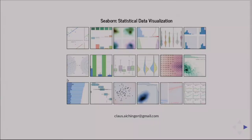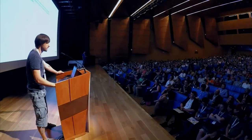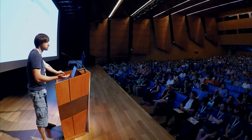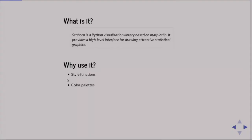I'm Klaus. I do data analysis and scientific computing, and I want to quickly show you a library that really increases the quality of my working life. Visually exploring datasets is often a very tedious task, and this is where Seaborn comes in handy. Seaborn is a visualization library built on top of matplotlib, scipy, and pandas — so it's standing on the shoulders of giants — and it offers a high-level interface to produce statistical graphics. It has nice style functions, appealing color palettes, and you can do distribution plots, regression plots, categorical plots, and axis grid objects. I'll give you a few examples.